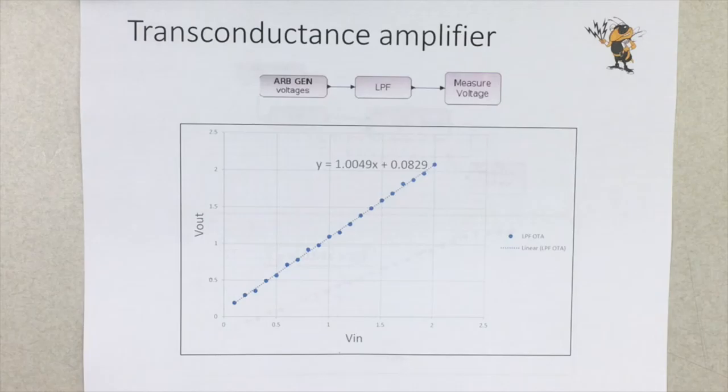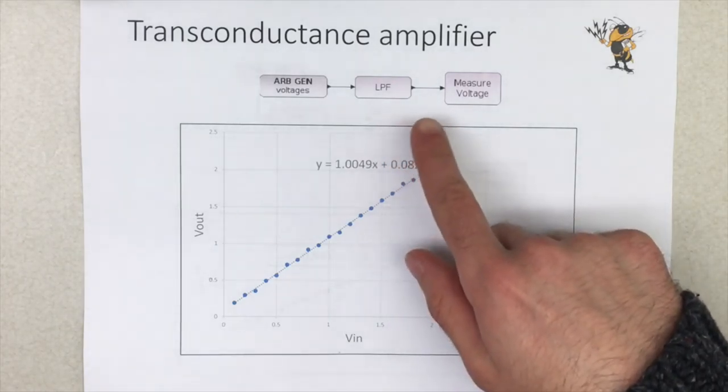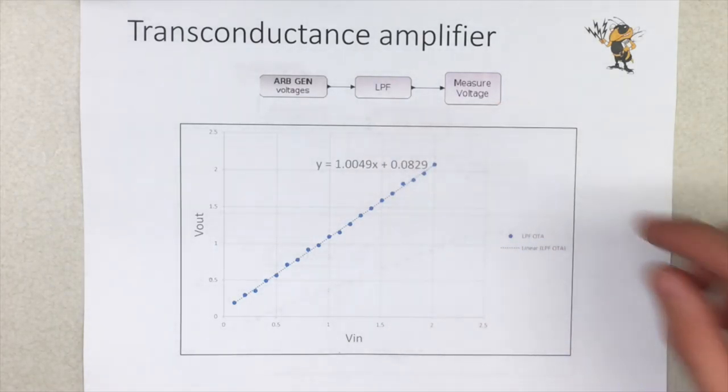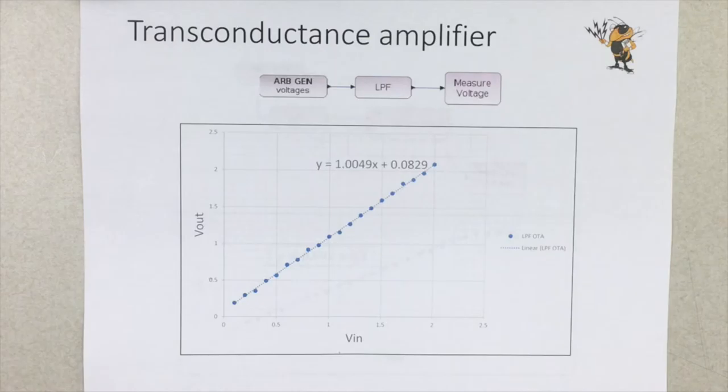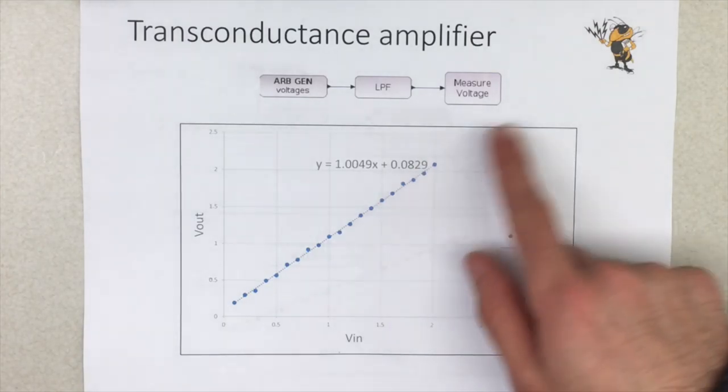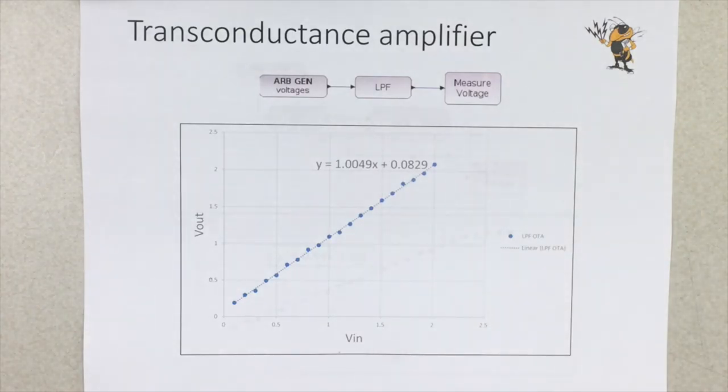Next we begin to build the transconductance amplifier, and here you can see the block diagram of the circuit. It's also acting as a low-pass filter, and then we just measure the voltage at the end, and here we get a nice graph of Vout over Vn, take the slope, so we get the gain of the circuit, which is very close to unity, which is exactly what we would expect for the open circuit characteristic.